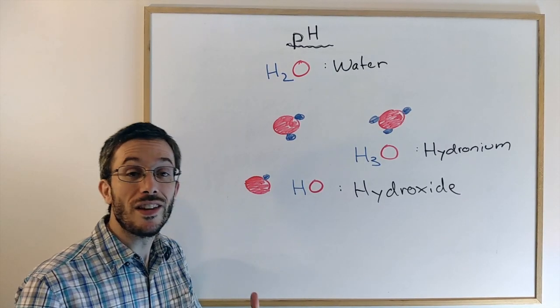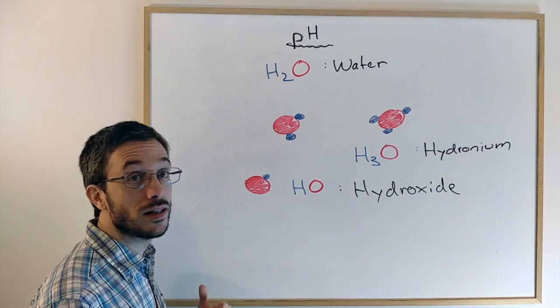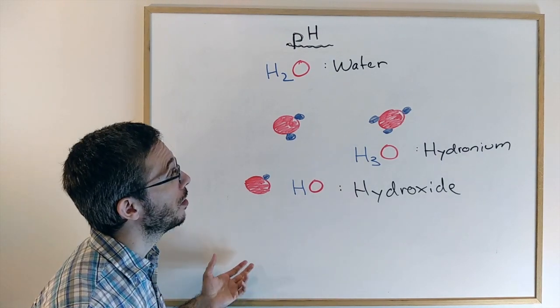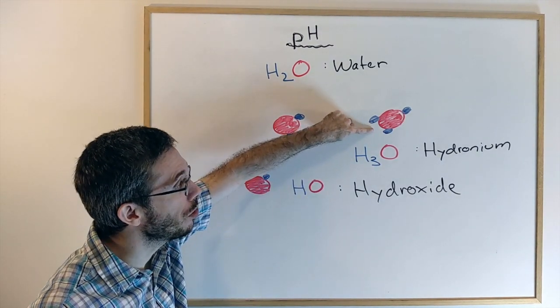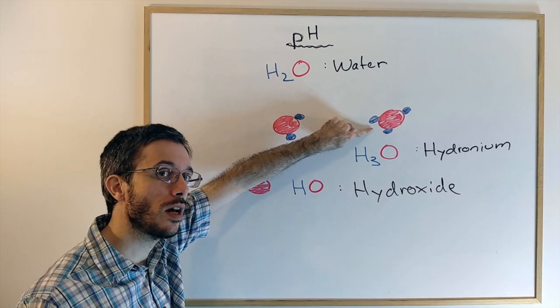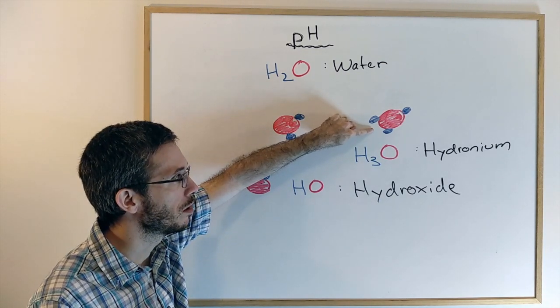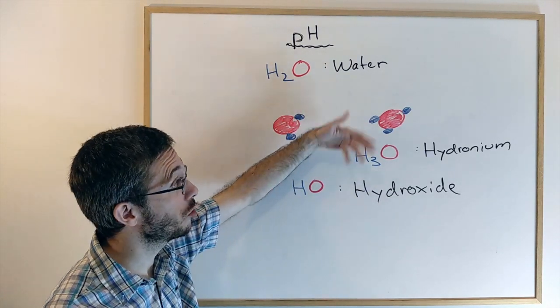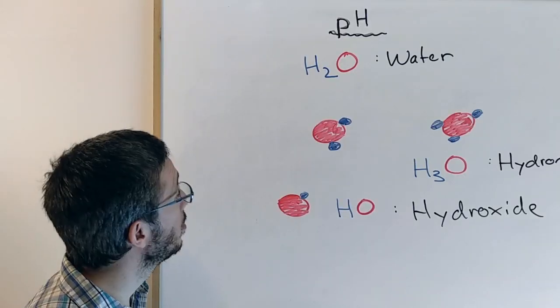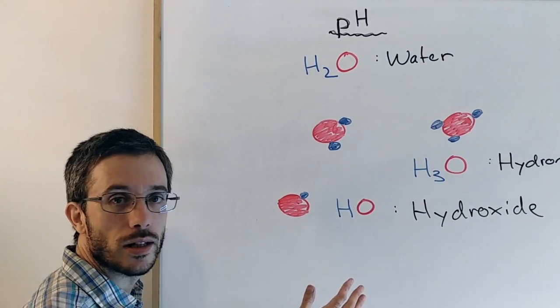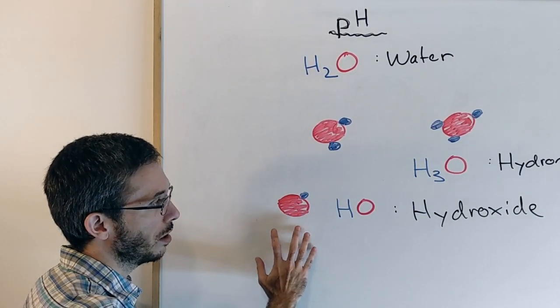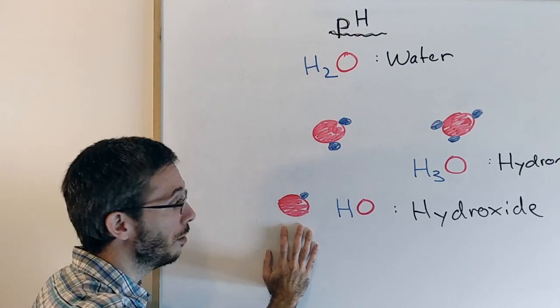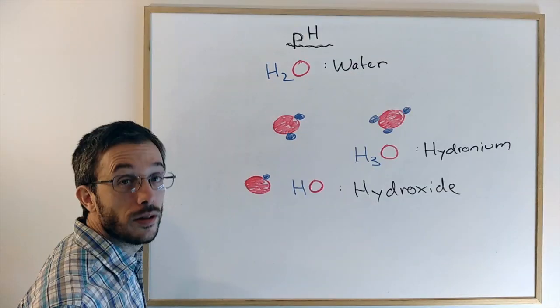Now, what is an acid? If you dump an acid into water, then the amount of hydronium molecules inside the water will increase. Usually, what is happening is that the acid brings some additional hydrogen in there. What is a base? A base is a substance that increases the hydroxide count if you dump it into water.